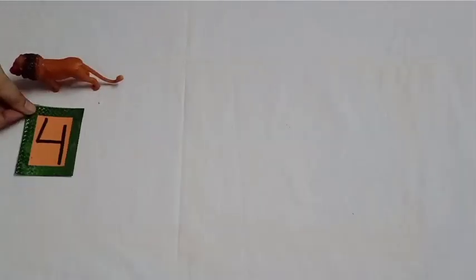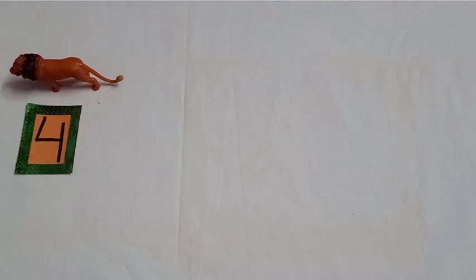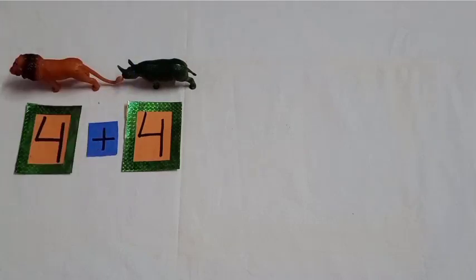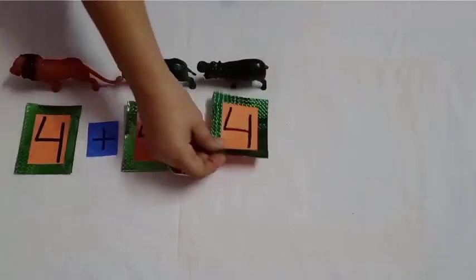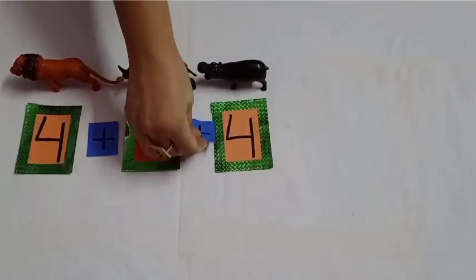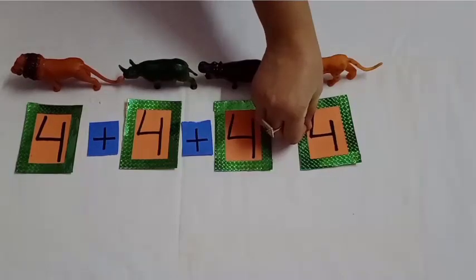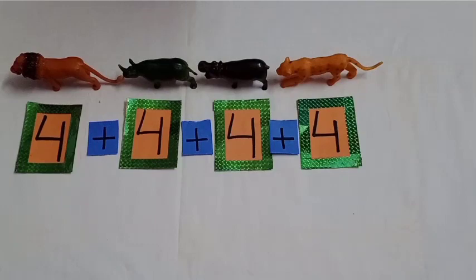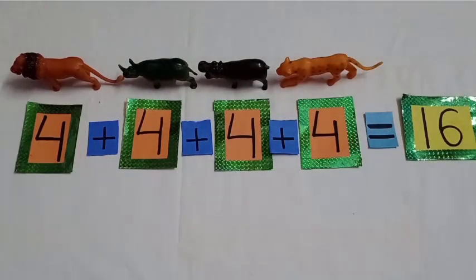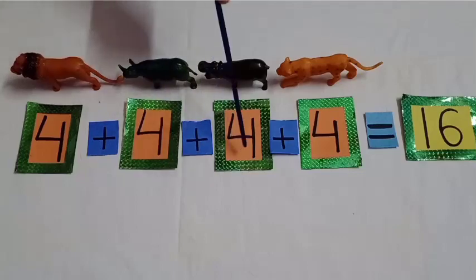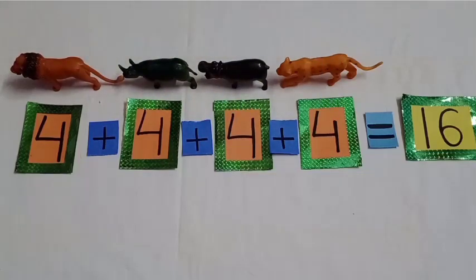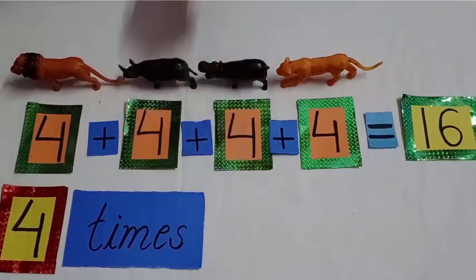This animal has four legs. The second one is also having four legs. Four and four is equal to eight. The third animal is also having four legs. Eight plus four is equal to twelve. The fourth animal also has four legs. Twelve plus four is equal to sixteen. Now see students, how many times four is there? One, two, three, four. So we can say four times four.